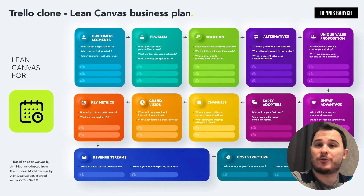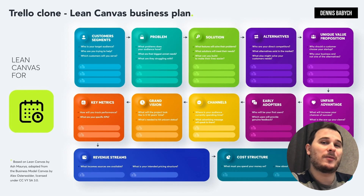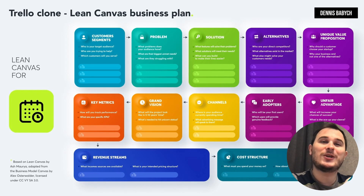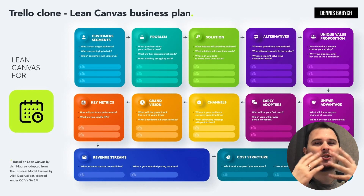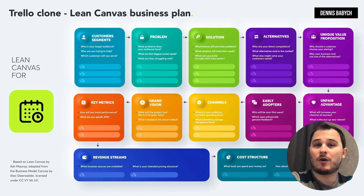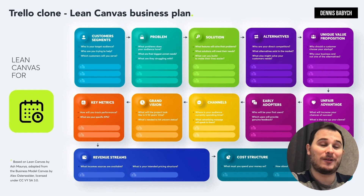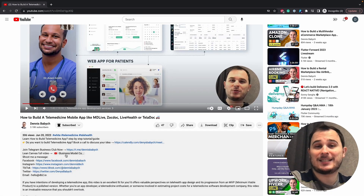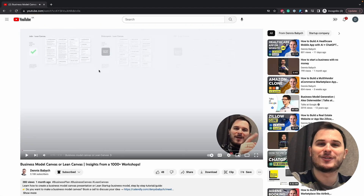Once you've identified your unique edge, it's time to target your early adopters. These individuals will be the pioneers who test your service and give you the most valuable feedback at the early stage. Discover where they spend their time online and create a compelling marketing hook to engage them. Give them something truly unique and powerful. Broadcast your unique offer via social media, influencers, or the timeless power of word of mouth or networking. If you're interested in learning more about Lean Canvas and getting insights from 1,000-plus workshops, I've created a full video about that — link in the video description.